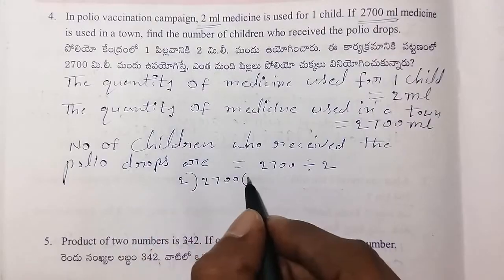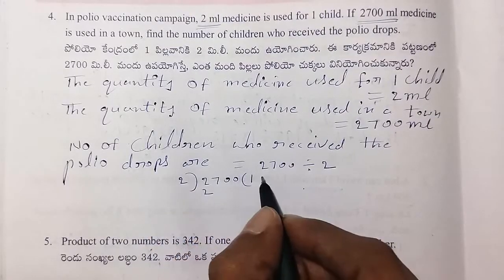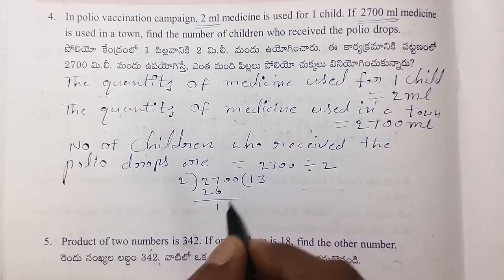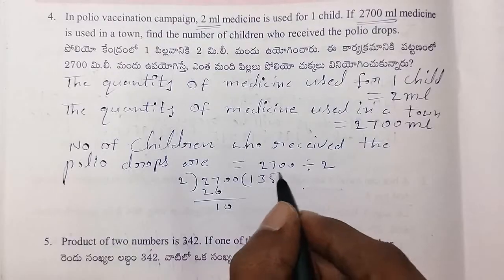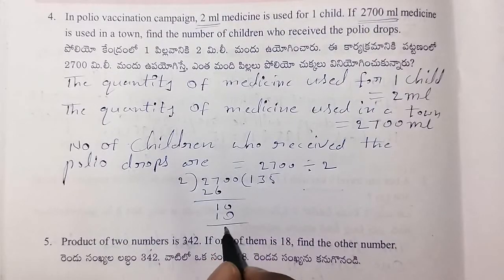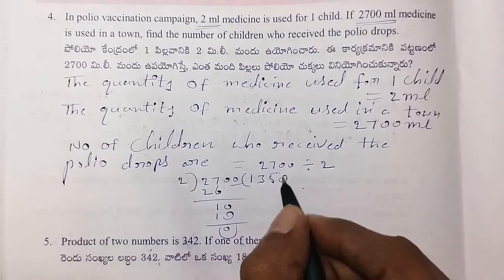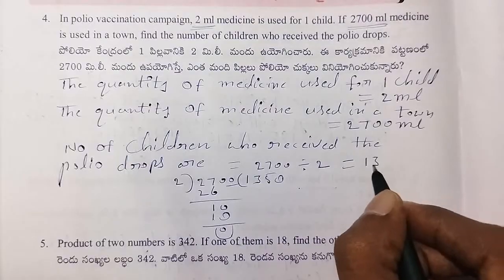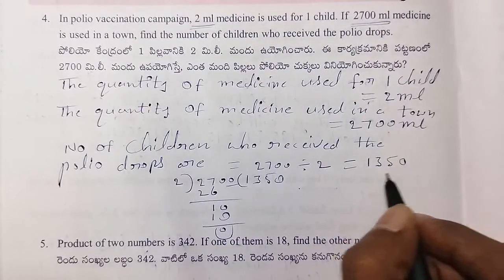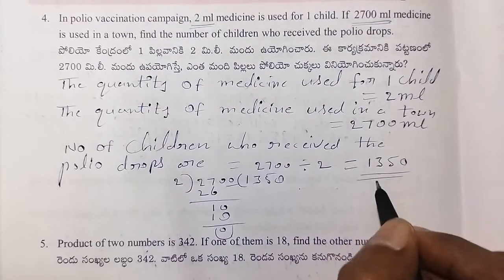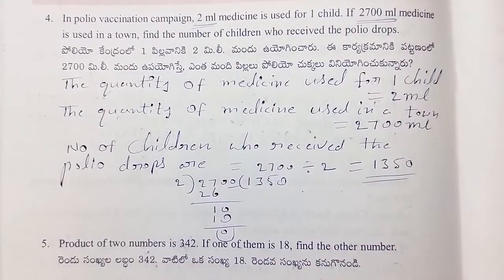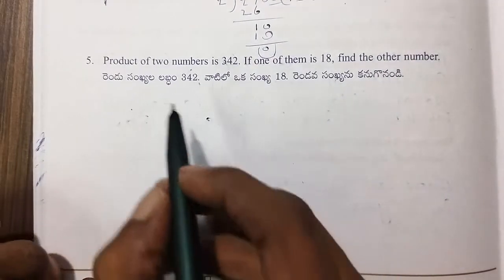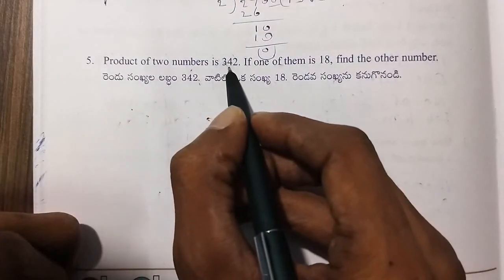So, 2 ones are 2. 2 threes are 6. The number of children who received the polio drops is 1350.